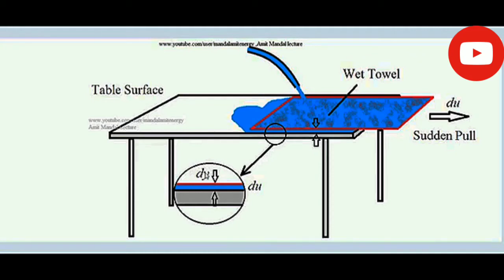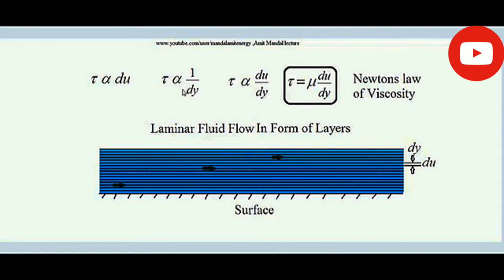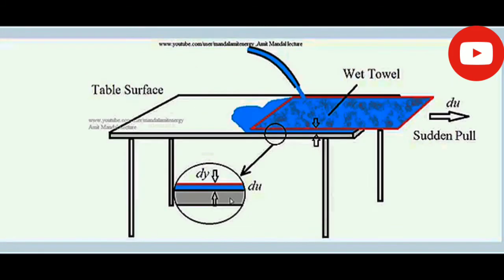When more water is added, dy — the distance between the layer in contact with the table and the layer in contact with the towel — is increased. In this case, pulling the towel feels smoother; the resistance offered for sliding is smaller. Newton's law of viscosity says shear stress is inversely proportional to dy, so since the distance has increased, less shear stress is developed and less resistance is offered for the towel's motion.